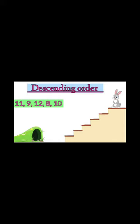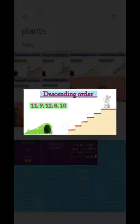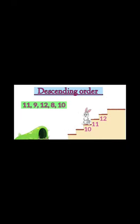Then in that case we will start moving rabbit from the top position of the sheet and rabbit will come down following these numbers. The numbers are 11, 9, 12, 8 and 10. And once we arrange these numbers in descending order, the rabbit will start moving this way.